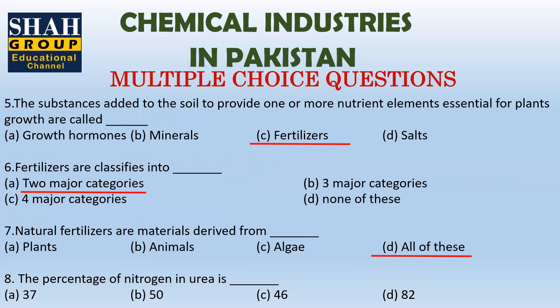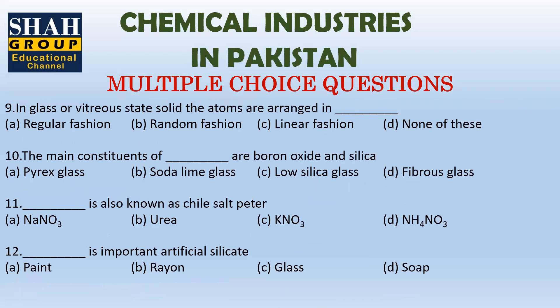The percentage of nitrogen in urea is about 46%. In glass or vitreous state solid, the atoms are arranged in a random fashion.